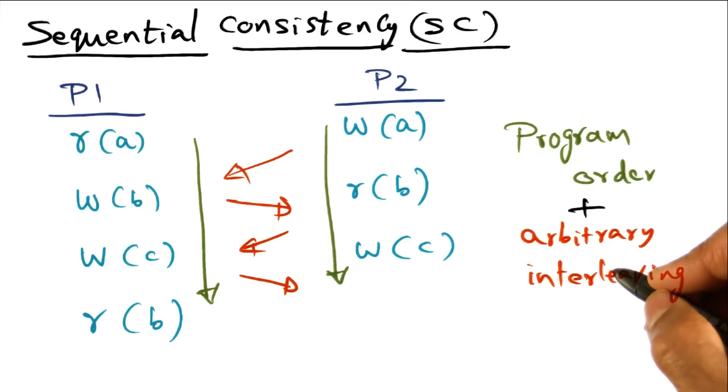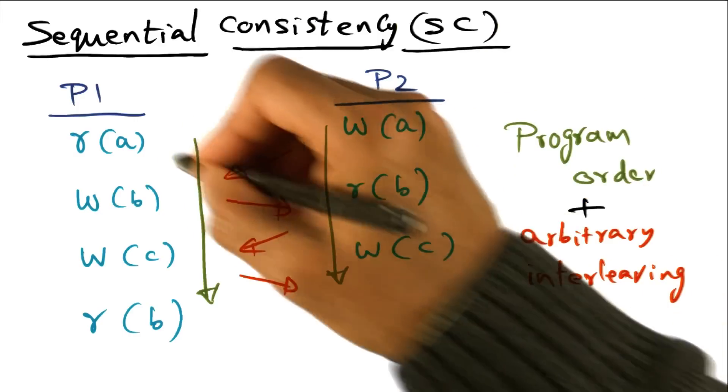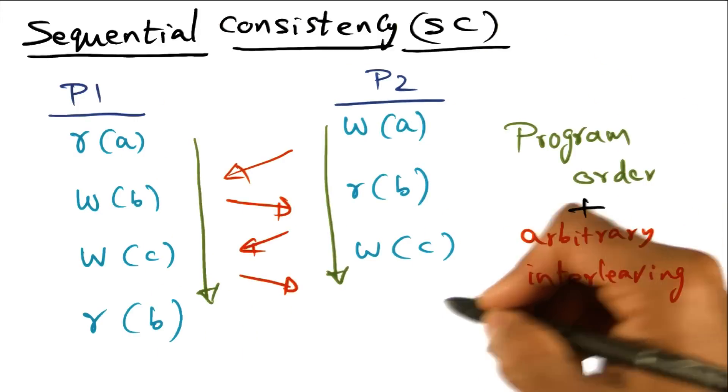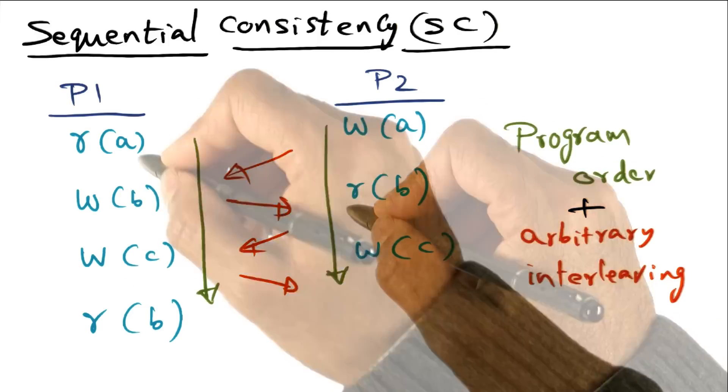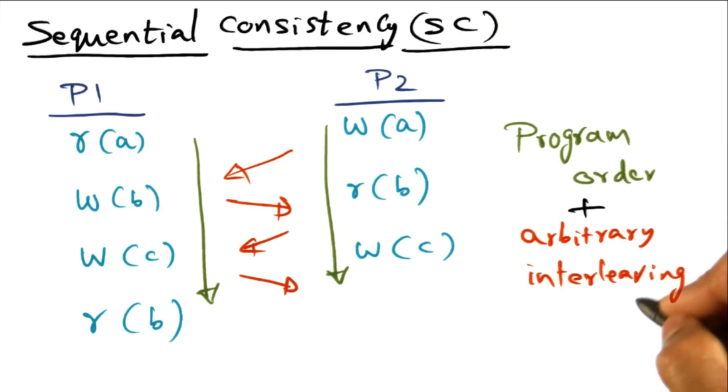When that happens, you want to observe the textual or program order for the accesses on the individual processors, but the interleaving of the memory accesses coming from the different processors is arbitrary.